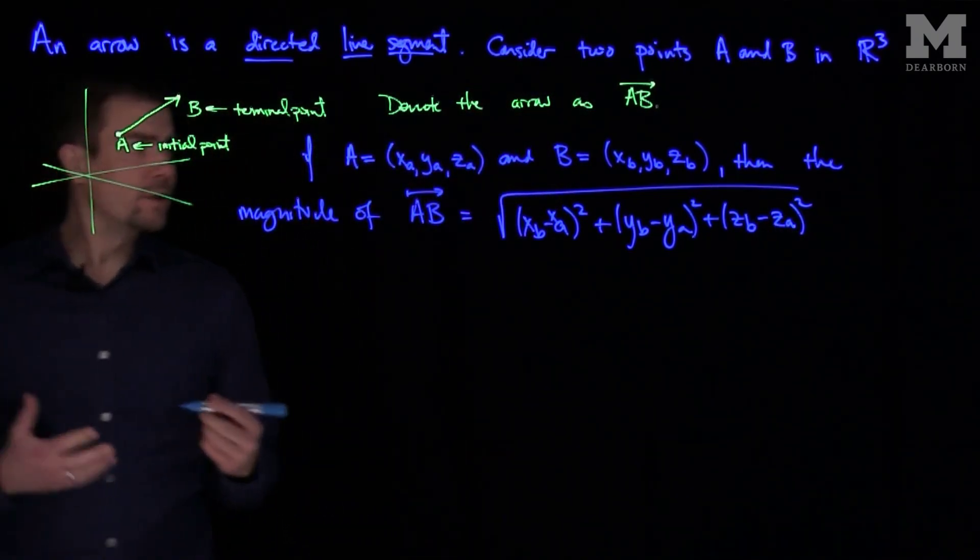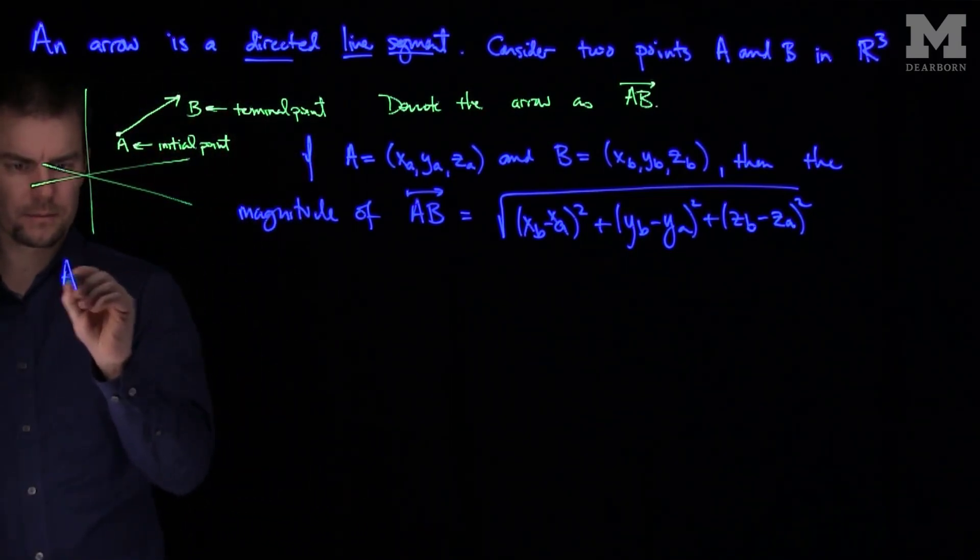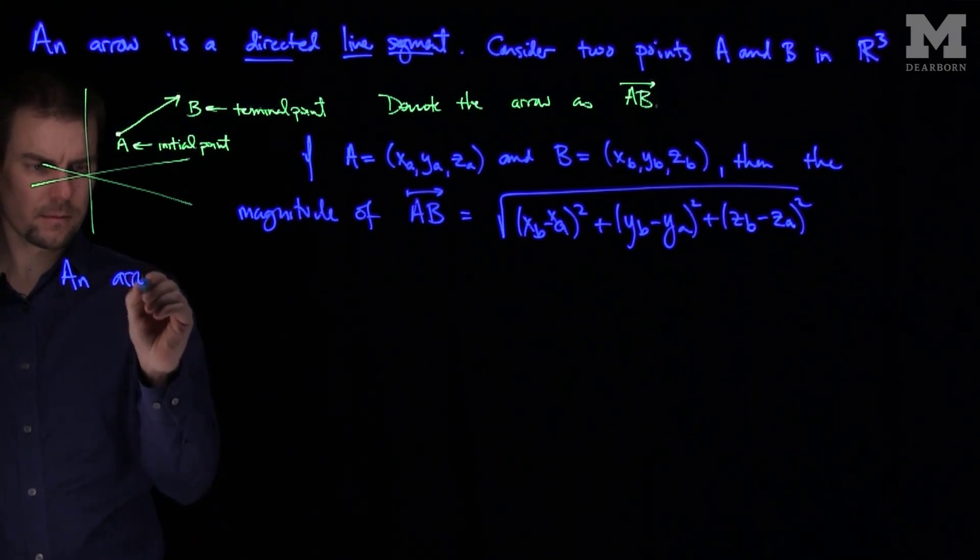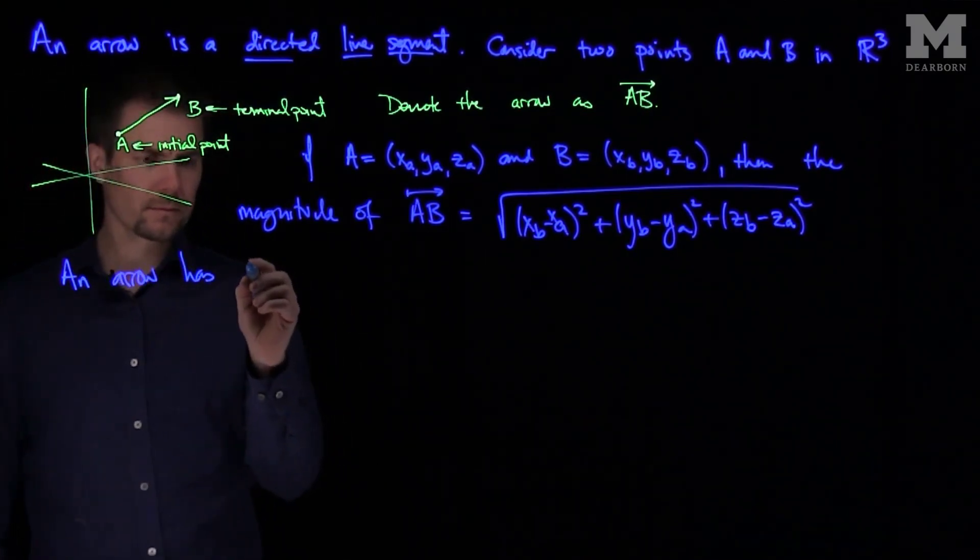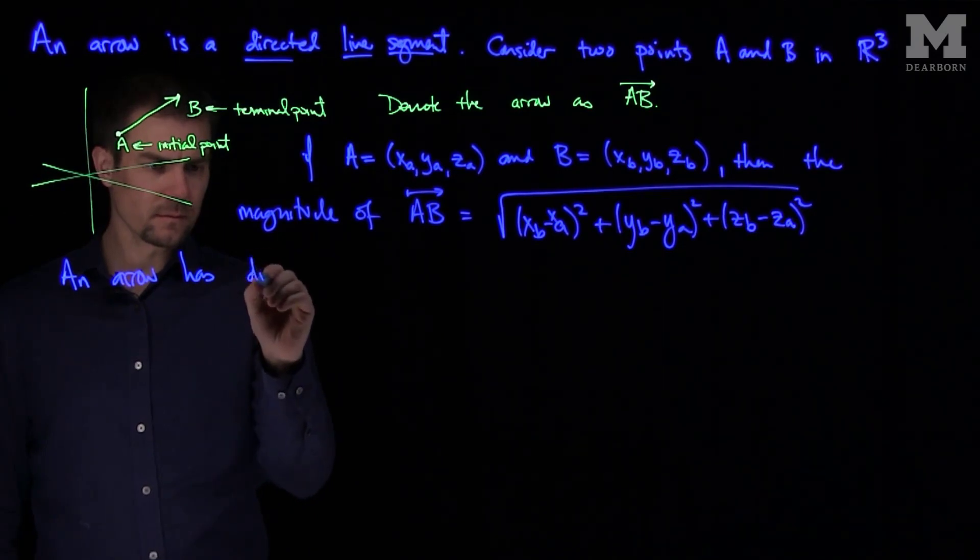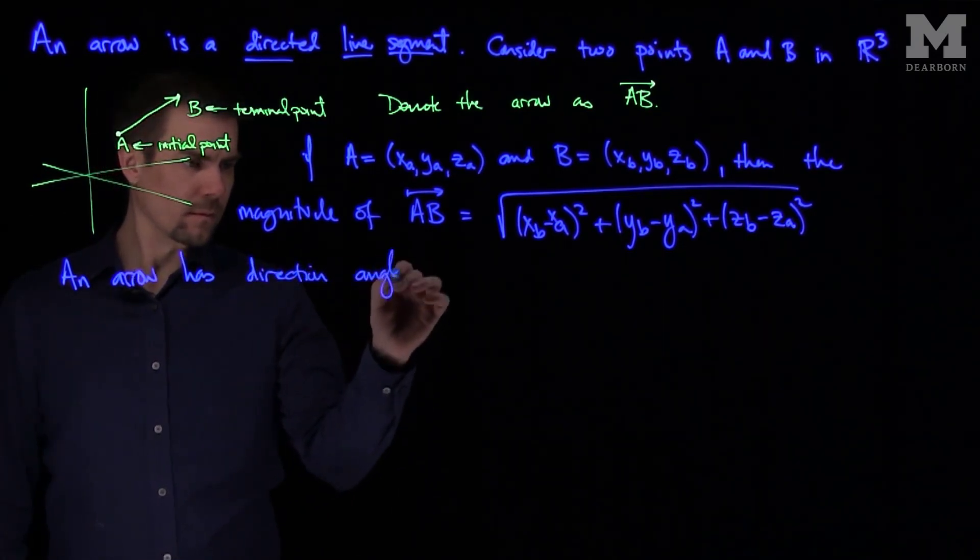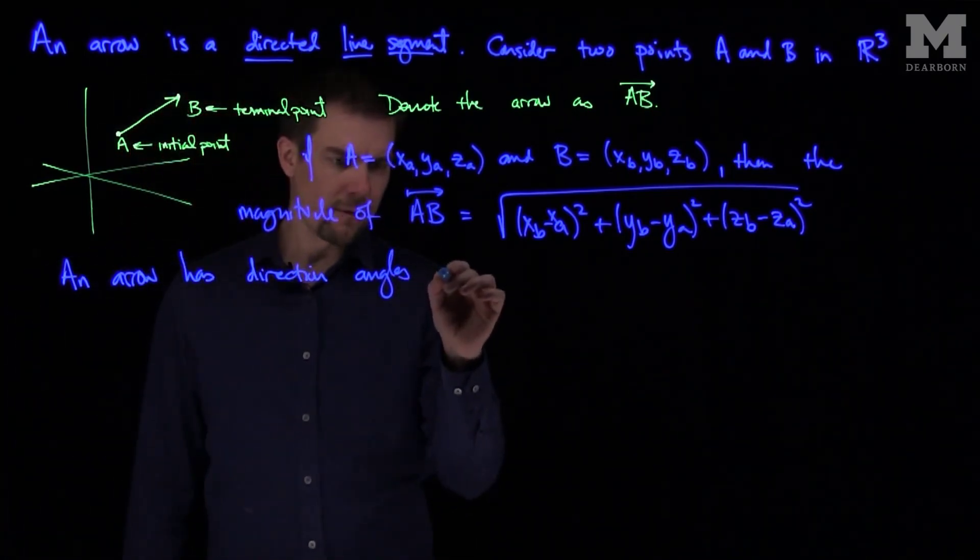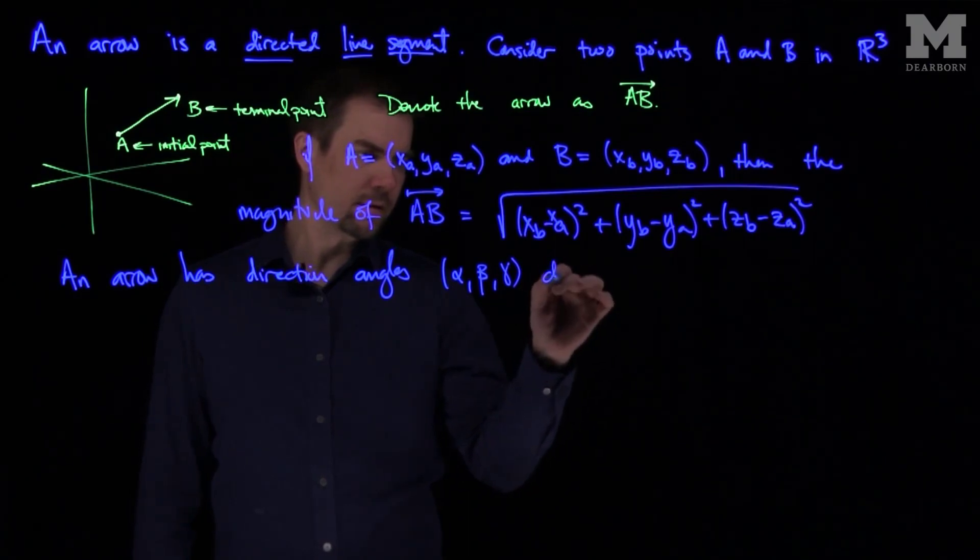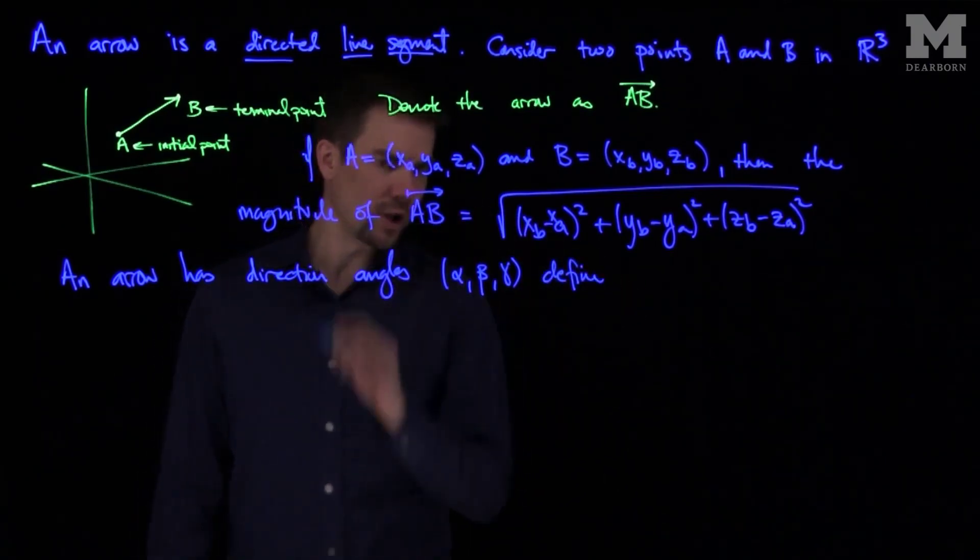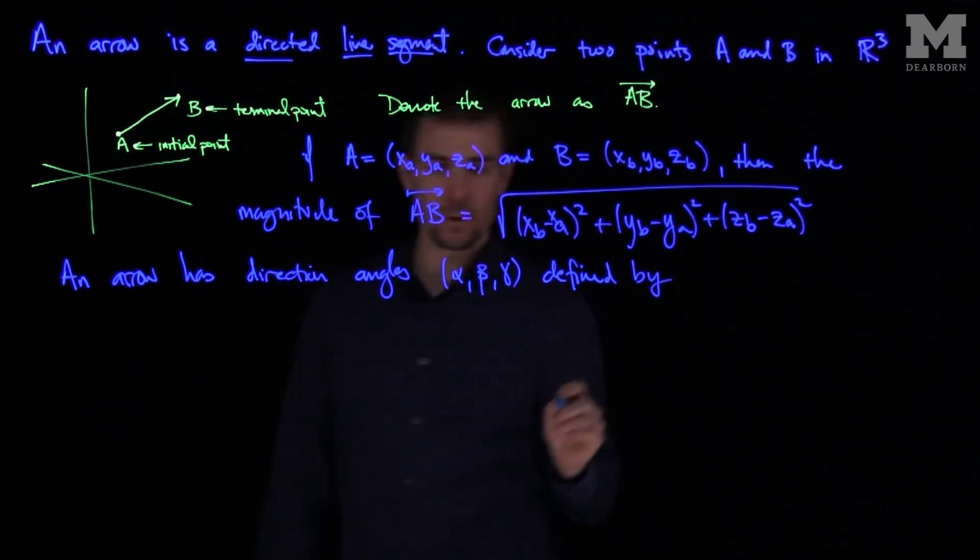We can also define direction angles. An arrow has direction angles alpha, beta, and gamma defined by the relationship